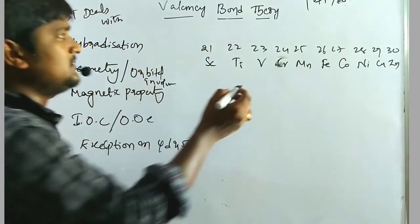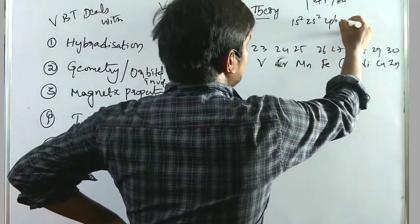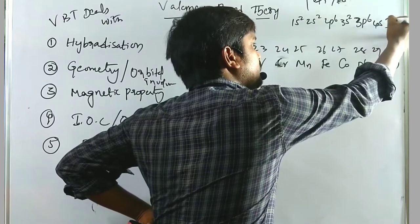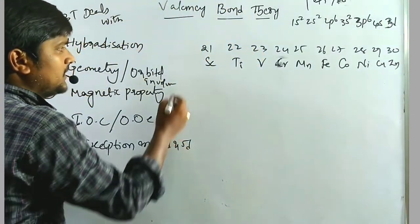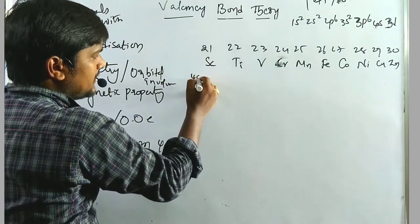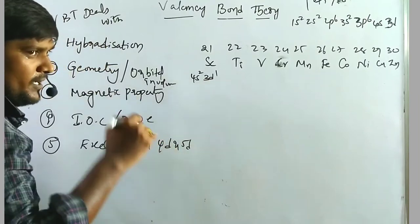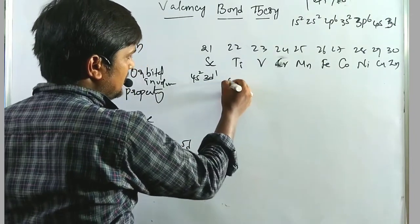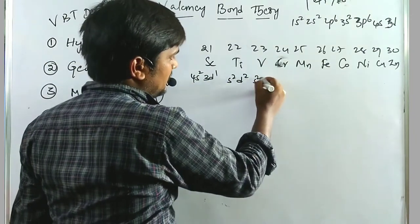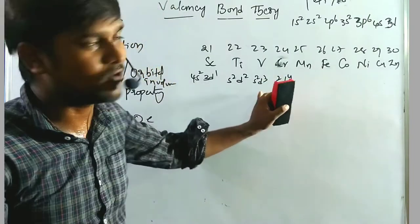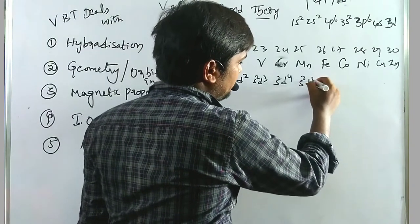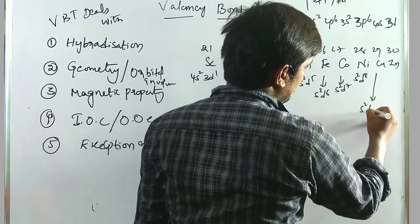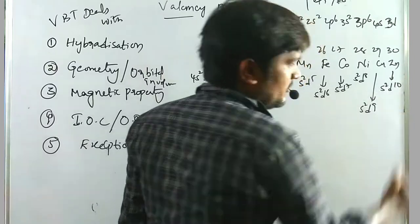After 3p⁶, the electron enters into the 4s orbital instead of 3d, due to its (n+l) value. So 4s and 3d orbitals come next; 18 electrons are completed in argon, then 19 and 20 electrons enter 4s². The remaining electrons enter the transition d-block elements, giving configurations: 4s²3d¹, 4s²3d², 4s²3d³, 4s²3d⁴, 4s²3d⁵, 4s²3d⁶, 4s²3d⁷, 4s²3d⁸, 4s²3d⁹, 4s²3d¹⁰.